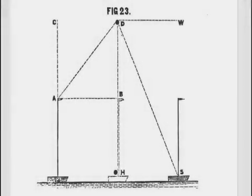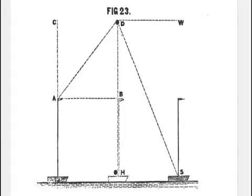Diagram Figure 23 (Section 2, Figure 2). The ball being thrown upwards in the direction AC and the vessel moving from A to B will cause it to pass in the direction AD, arriving at D when the vessel reaches B. The two forces have expended themselves when the ball arrives at D. It will begin to descend by the force of gravity in the direction DBH. But during its fall the vessel will have reached position S, so that the ball will drop far behind it at point H. To bring the ball from D to S, two forces would be required as DH and DW. But as DW does not exist, the force of gravity operates alone, and the ball necessarily falls behind the vessel at a distance proportionate to the altitude attained at D and the time occupied in falling from D to H.